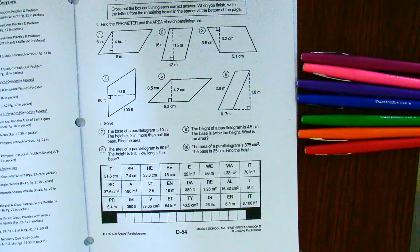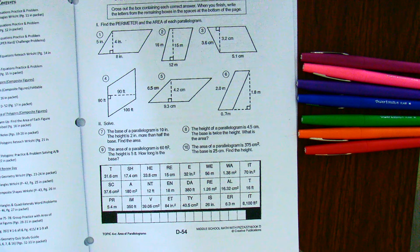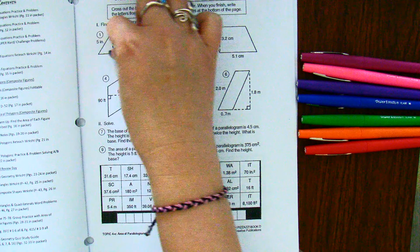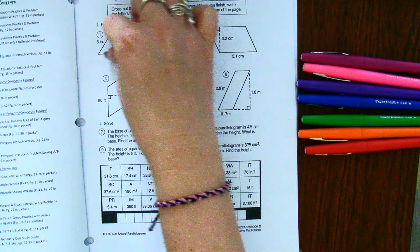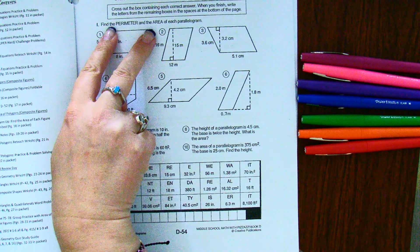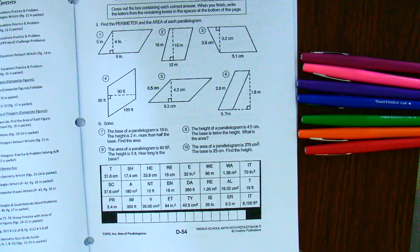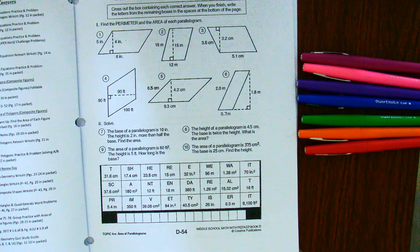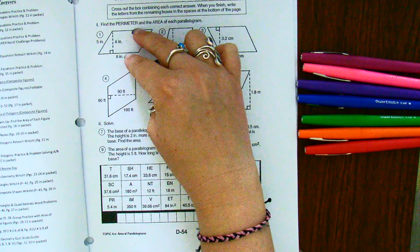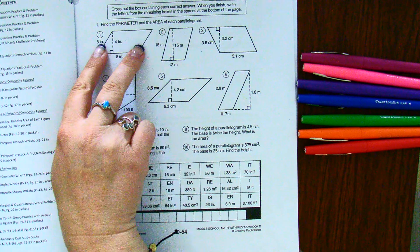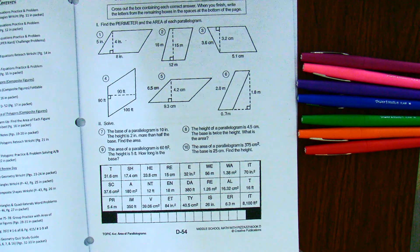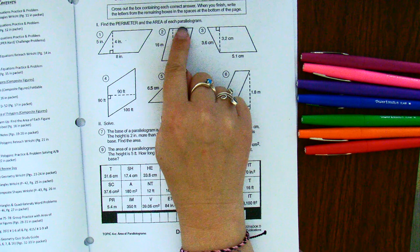Notice that all of these are parallelograms because it has this side, these two sides are parallel to each other, and these two sides are parallel to each other. So whenever you have two pair of opposite sides that are both congruent and parallel to each other, you have what is known as a parallelogram.